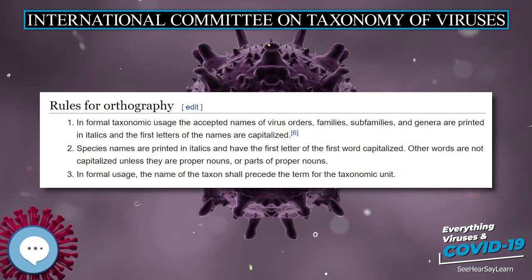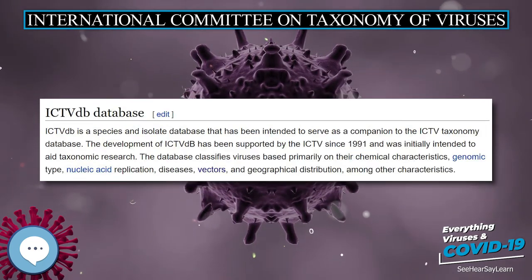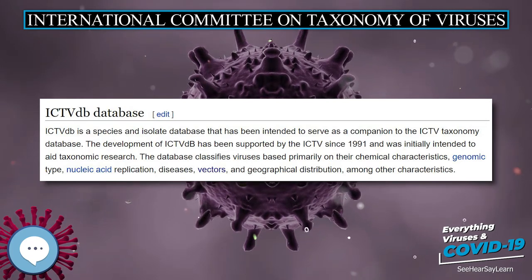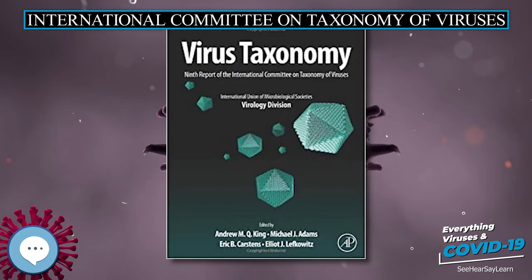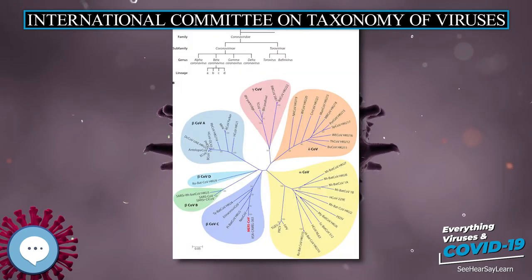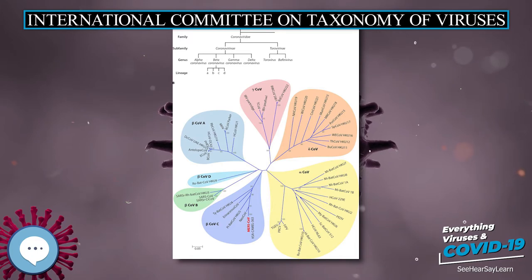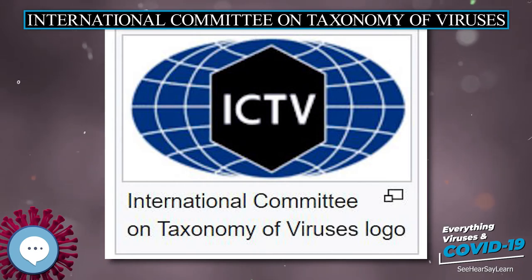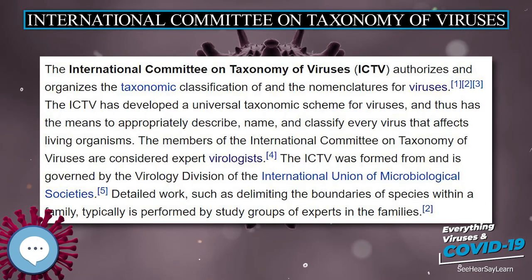The objectives of the International Committee on Taxonomy of Viruses and the ICTV's Essential Principles of Virus Nomenclature are outlined in its Universal Virus Classification System, which uses a slightly modified version of the standard biological classification system. It only recognizes the taxa order, family, subfamily, genus, and species.